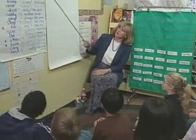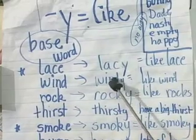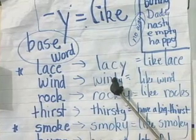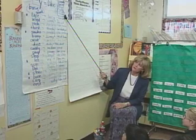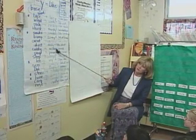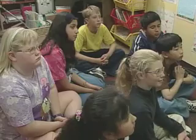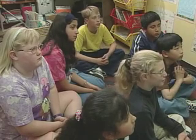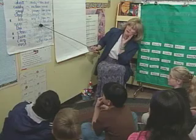Ms. Barron starts with words students have seen in their reading. She recalls that Yvonne had noticed that some of the words they were reading had a Y ending on them. Working from Yvonne's observation, they create a chart of Y words, and Ms. Barron reviews the two columns.